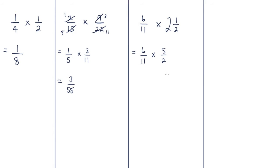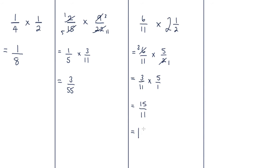Before we multiply, we check if we can cancel any of these fractions. There's a common factor between six and two: two goes into six three times and two goes into two once. So we have three over eleven multiplied by five over one. Multiplying the numerators: three times five is fifteen; the denominators: eleven times one is eleven. This is an improper fraction, so we convert it back — eleven goes into fifteen once with four elevenths remaining. Final answer: one and four elevenths.